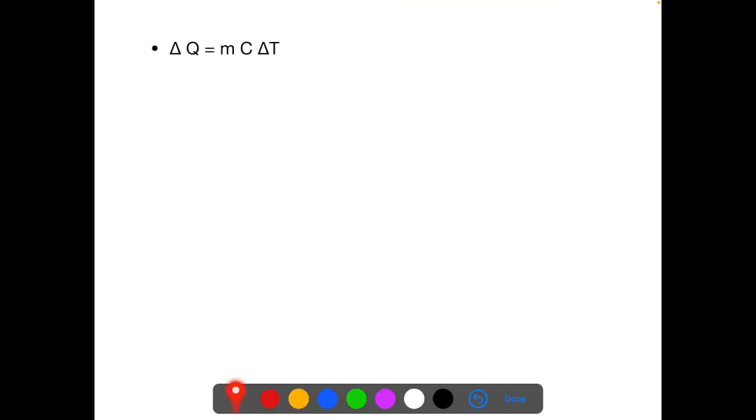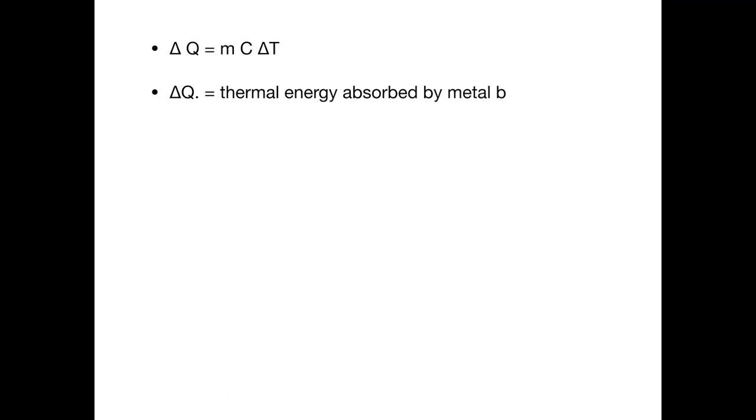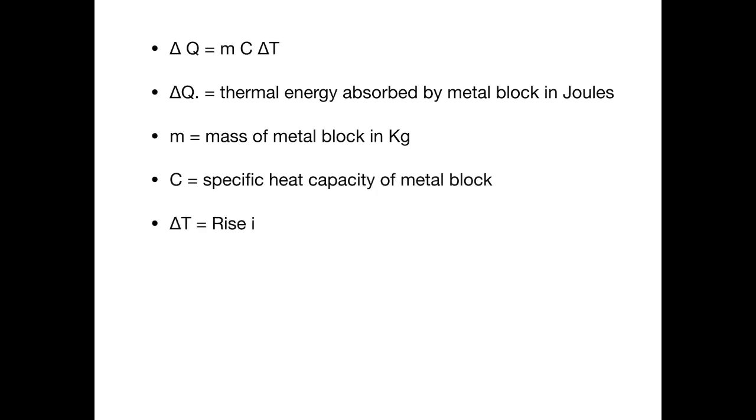We just rearrange the equation as ΔQ equals to MC ΔT. ΔQ is thermal energy absorbed by the metal block in joules. M is the mass of metal block in kilograms. C is specific heat capacity, and the temperature can be expressed in Kelvin or in Celsius.